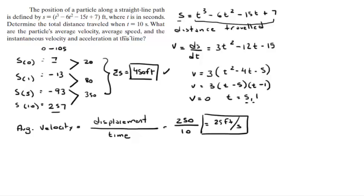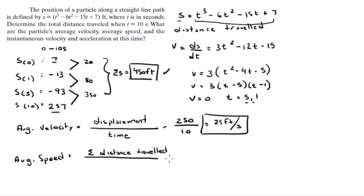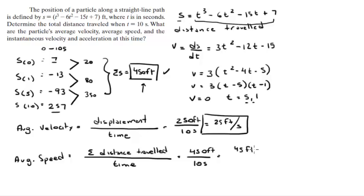The third part is average speed. Average speed equals total distance traveled over time elapsed. The total distance traveled was 450 feet, and the time elapsed is 10 seconds. So the average speed is 45 feet per second.